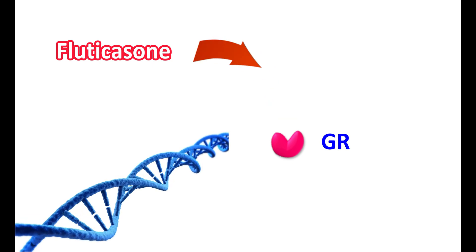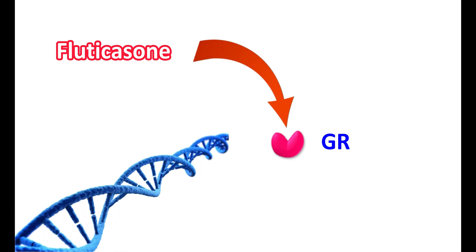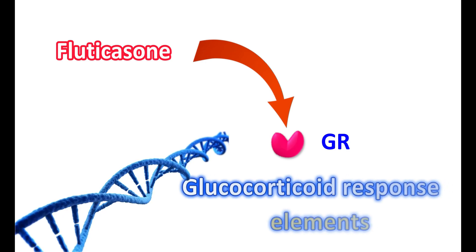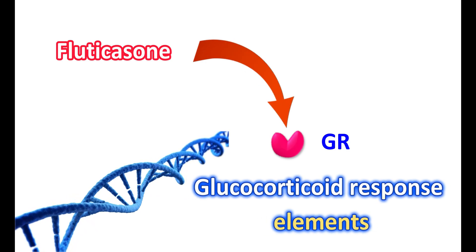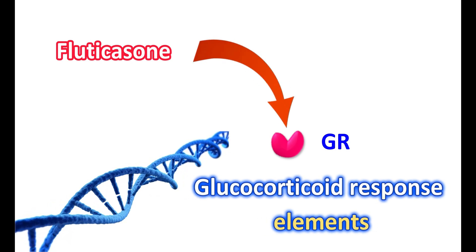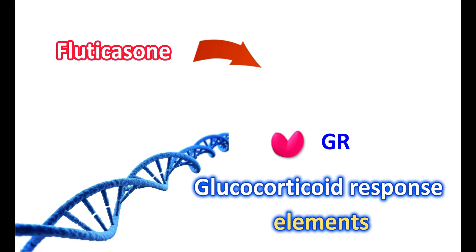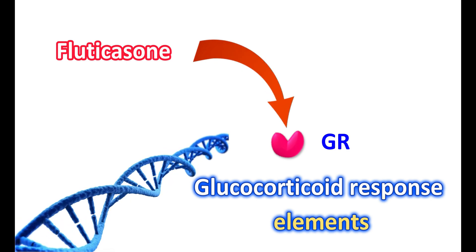Within the nucleus, they can interact with the DNA and bind to specific DNA sequences. They are commonly called glucocorticoid response elements. By interacting with these DNA sequences, it inhibits the expression of genes that are involved in inflammation.